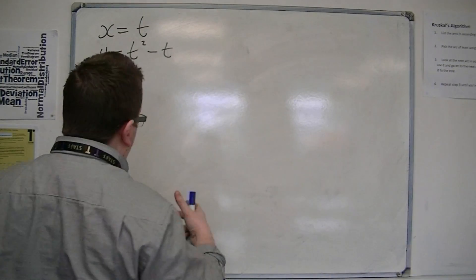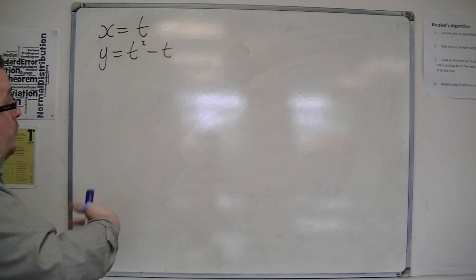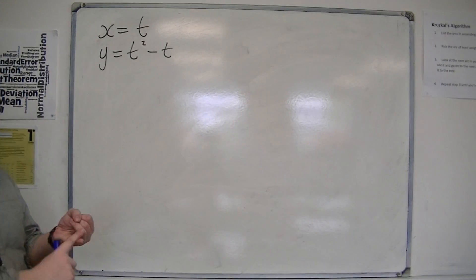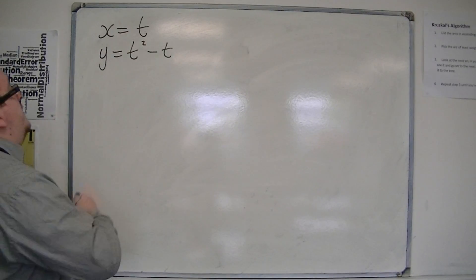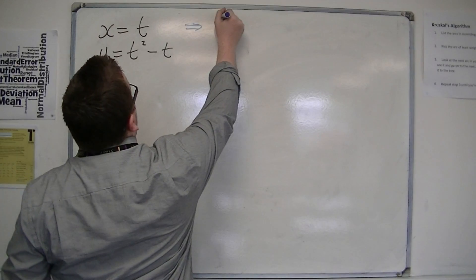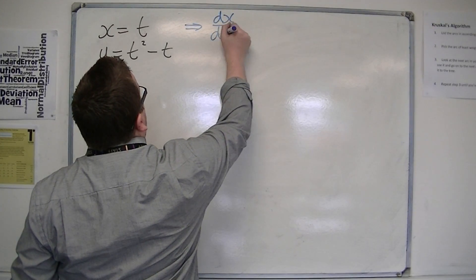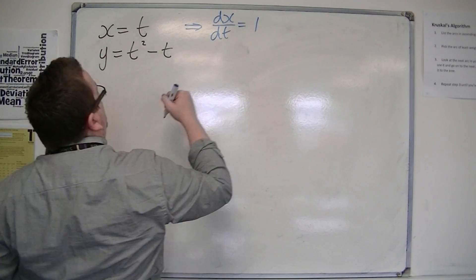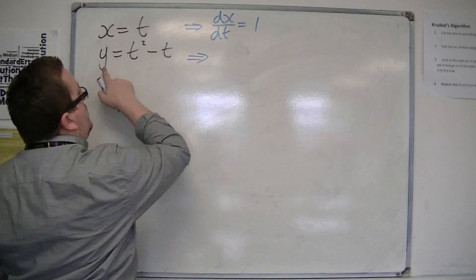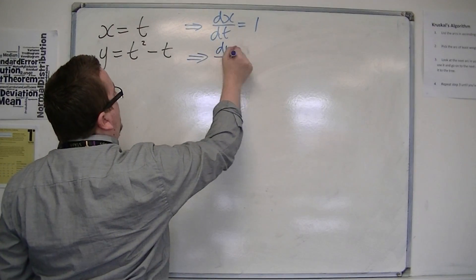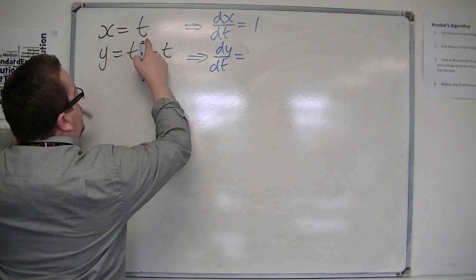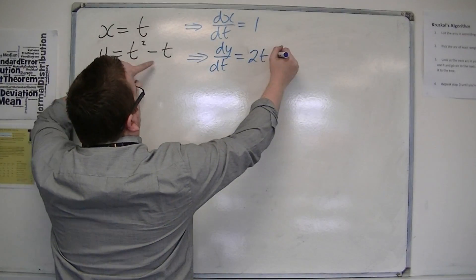First thing to do is find dy/dx, but in order to do that I need to find dx/dt and dy/dt. If I differentiate x with respect to t, I get 1. And if I differentiate y with respect to t, I get 2t minus 1.